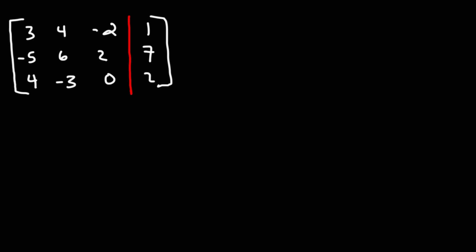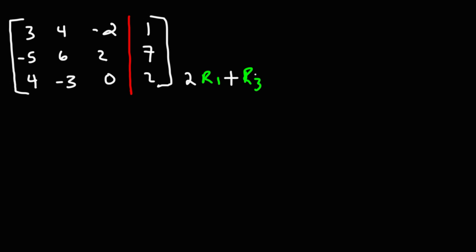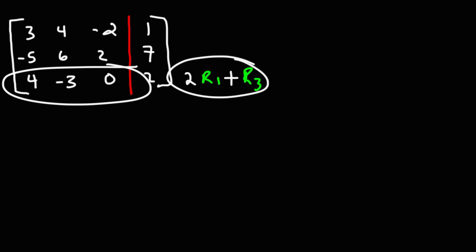What would you do if you saw a row operation that looks like 2R1 plus R3? What it means is that we're going to multiply the elements in row 1 by 2, and then add the elements in row 3 to that result. Notice that this row operation is placed next to the third row, so the results will go in the third row.